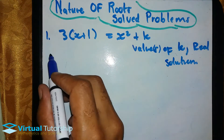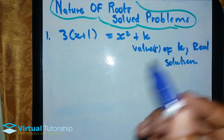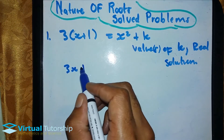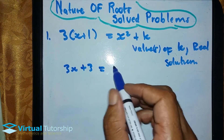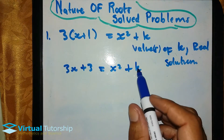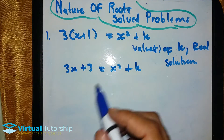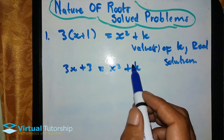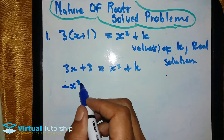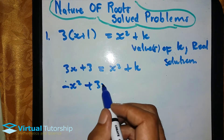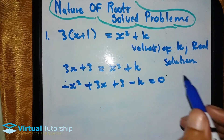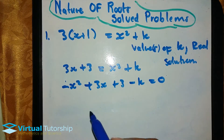The first thing we need to do is simplify the equation and write it in standard form. So it's going to be 3x plus 3 — remove the bracket. Remember, always remove brackets in an equation. So we write it in standard form: minus x squared plus 3x plus 3 minus k equal to zero.